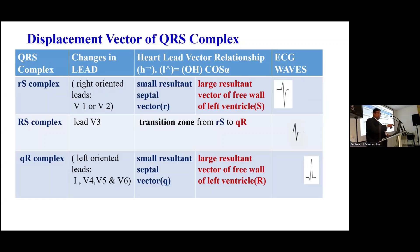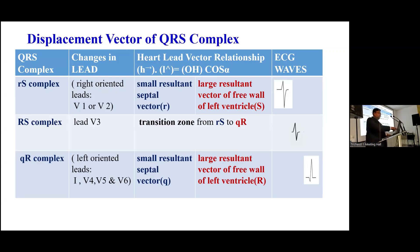Following the septum, the free walls of the ventricles are activated, and the resultant vector direction is from right to left. The resultant septal vector is from left to right, but the free walls of both ventricles have direction from right to left. We can apply the same concepts for the formation of R waves and S waves in the precordial leads. In the right-sided precordial leads, the small R is due to the resultant septal vector followed by the activation of free walls. In the left-sided precordial leads, the small Q is negative due to the resultant septal vector, followed by the R complex due to activation of the free walls.